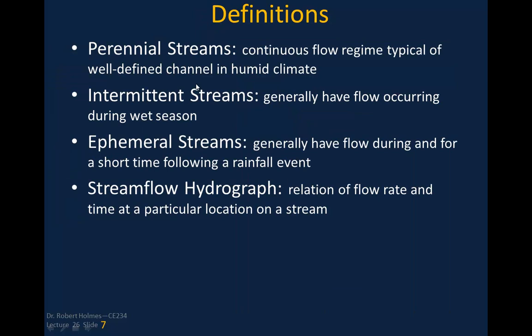Let's talk about some definitions. Perennial streams have a continuous flow regime, typical of a well-defined channel in a humid climate — stream flow is present year-round. Intermittent streams generally have flow during the wet season, and go dry during the dry season as they are not fed by groundwater year-round. Ephemeral streams generally have flow only during and for a short time following a rainfall event — they only flow when a rainfall event is intense enough to generate runoff.